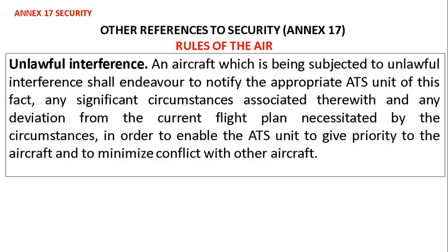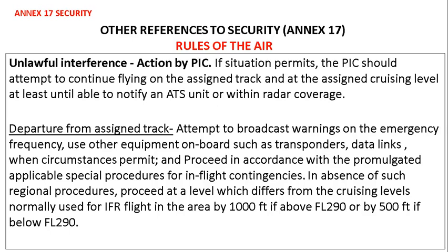Actions by pilot-in-command: if the situation permits, the pilot-in-command should attempt to continue flying on the assigned track and at the assigned cruising level at least until able to notify an ATS unit or within radar coverage. If the pilot-in-command is departing from the assigned track, they should attempt to broadcast warnings on the emergency frequency, use other equipment on board such as transponders and data links, and proceed in accordance with applicable special procedures. In the absence of such procedures, proceed at a level differing from the cruising levels used for IFR flights by 1,000 feet if above FL290, or by 500 feet if below FL290.